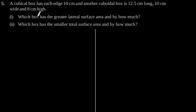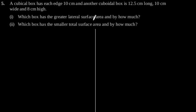Exercise 13.1, Question number 5. A cubical box has each edge 10 cm, and another cuboidal box is 12.5 cm long, 10 cm wide, and 8 cm high. First, which box has the higher lateral surface area and by how much?